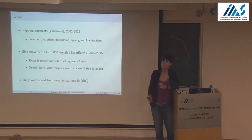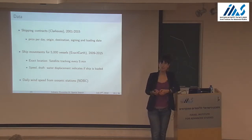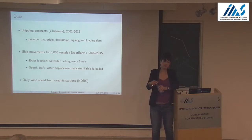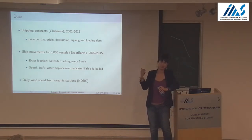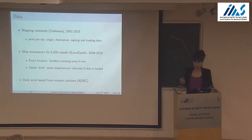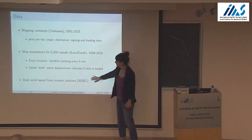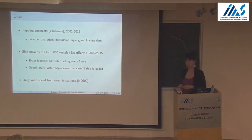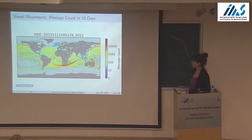The cool thing is that the data also has a variable called draft — the vertical distance between the waterline and the bottom of the ship — so at any point in time you know if the ship is loaded or not. Container shipping is a completely different segment where you would use boxes, and you can't put iPhones in bulk ships or iron ore in container ships. We also collect weather data giving wind speed at sea.